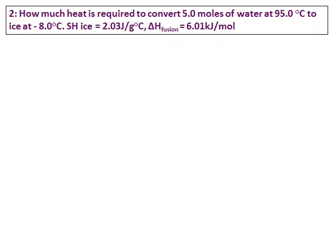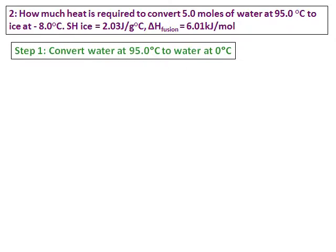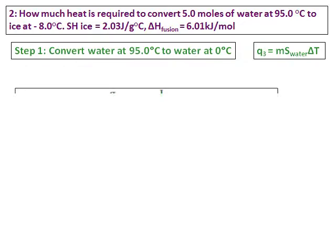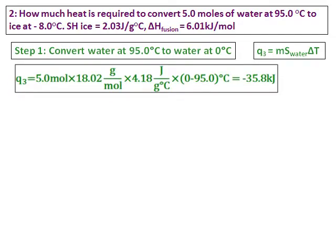New question: how much heat is required to convert 5 moles of water at 95 degrees Celsius to ice at negative 8 degrees Celsius? Specific heat of ice and heat of fusion of ice are given. Here I don't need all five steps — I'm starting with water and going back to ice. Step 1: convert water at 95 degrees Celsius to water at 0 degrees Celsius using Q3 = ms∆T, with specific heat of water = 4.18. Convert moles to mass using the molar mass and calculate Q3.